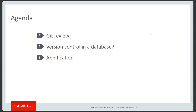Here's an overview of what we'll be doing today. I'm going to kick things off with a very high-level review of Git and some basic functionality that we use Git for. Then I'll get into version control in the database. Finally, I'll talk about 'appification' — taking some of the concepts from part two and applying them in a real application, as it's not always the same as doing demos in SQL Developer.